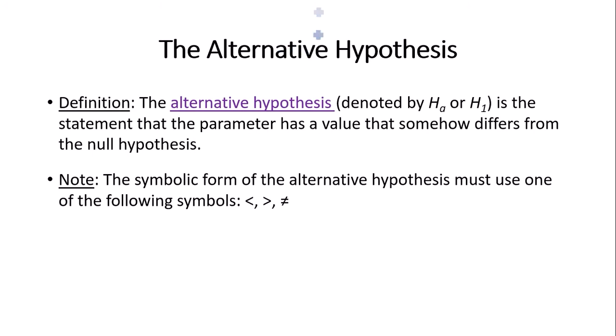The alternative hypothesis, denoted by H-sub-A or H1, is the statement that the parameter has a value that is different from the null hypothesis. Equality does not go with the alternative hypothesis. The symbolic form of the alternative hypothesis must be less than, greater than, or not equal to — it can only be one of these three symbols.